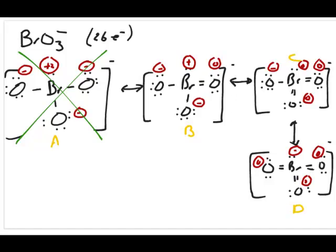Looking at the remaining three structures, B is also not as good as C or D. In structure B, three atoms have formal charges, whereas in C and D, only one atom has a formal charge while the other three are zero. So our top contenders are C and D, and we need to look at the other rules to pick between them.